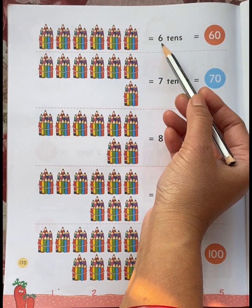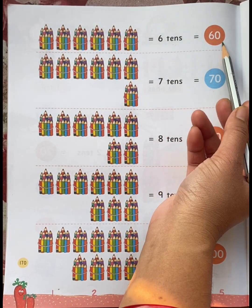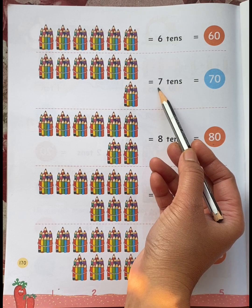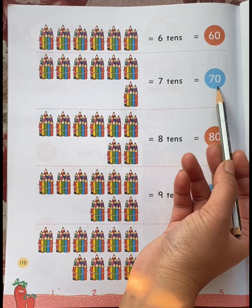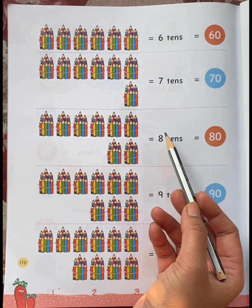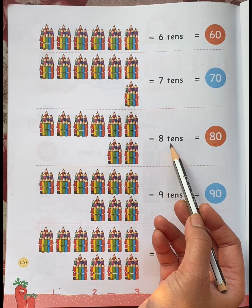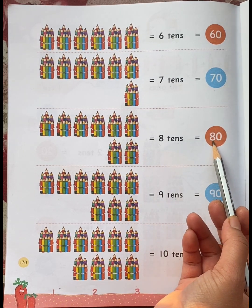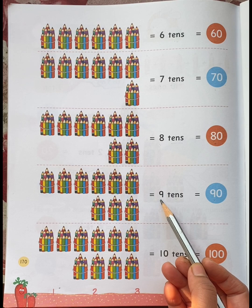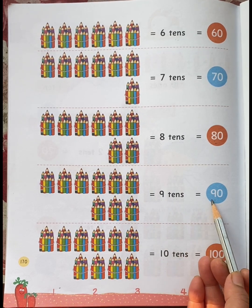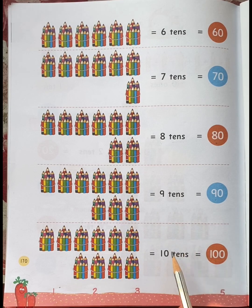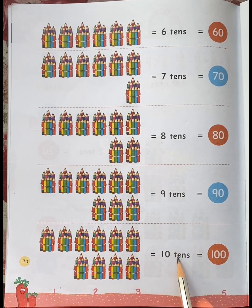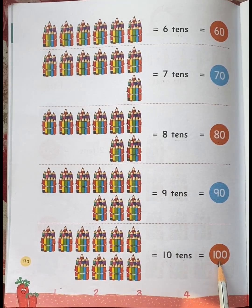Six tens means sixty color pencils. Seven tens means seventy color pencils. Eight tens means eighty color pencils. Nine tens means ninety color pencils. Ten tens means one hundred color pencils.